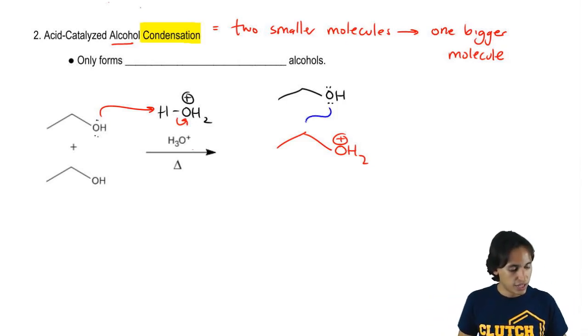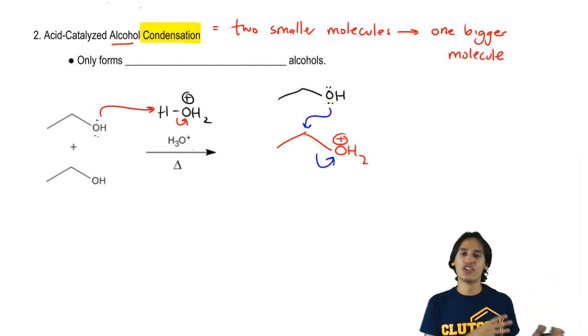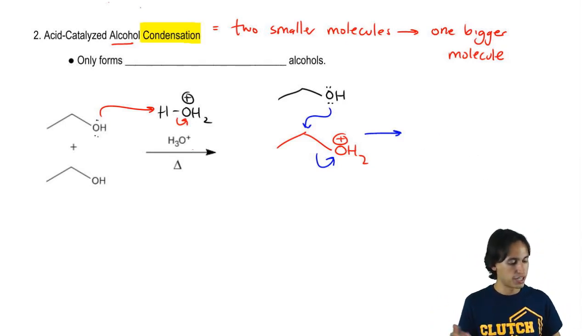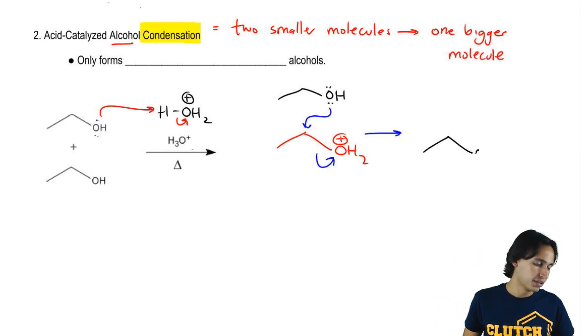reaction where I get this attacking that carbon and kicking out the good leaving group. So now what we're going to wind up getting is – let me just draw it in the same colors that I used – the black alcohol that still has an H on it.